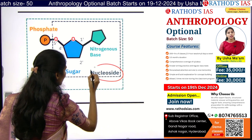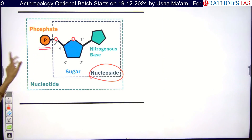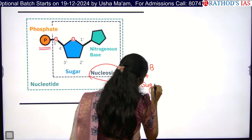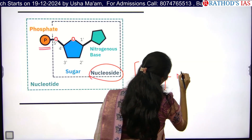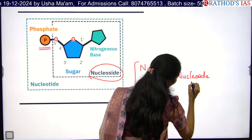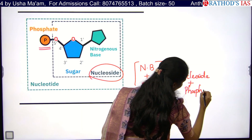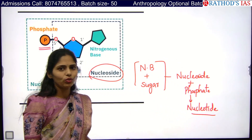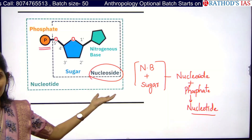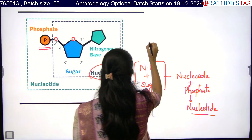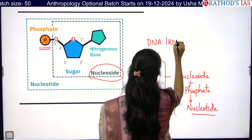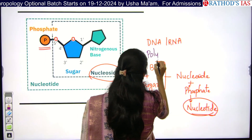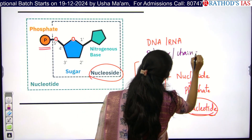For this nucleoside, if you add a phosphate group, that is called a nucleotide. So: nitrogen base plus sugar forms a nucleoside, and nucleoside plus phosphate group forms a nucleotide. DNA and RNA are nothing but a polymer or chain of nucleotides. That is why you need to understand this concept — to understand DNA and RNA, you have to know about the nucleotide.